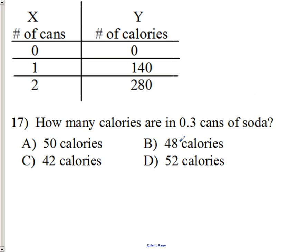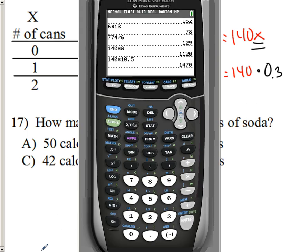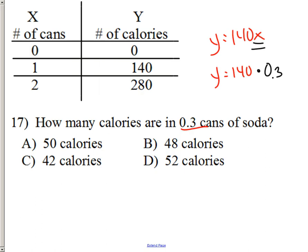17. Same thing. Even if it's got a decimal that's less than 1. Cans is by X. So, 140 times 0.3. Basically, you're trying to find 30% of it. That's what 0.3 would represent. And, oops, I didn't type it in right. 140 times 0.3 would be 42. So, 42 calories.